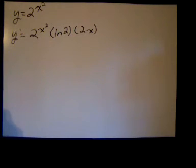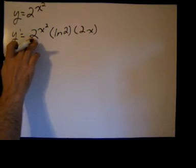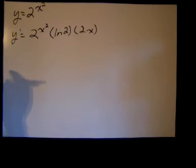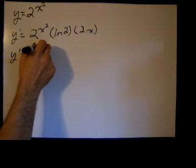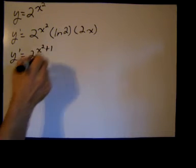You can rearrange this a little bit. 2 and 2 are like bases and you can add the exponents of like bases. So y prime equals 2x squared plus 1.